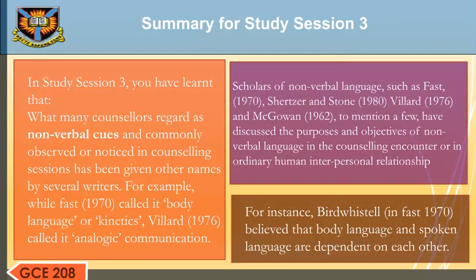Summary for Study Session 3. In Study Session 3, you have learned that what many counselors regard as non-verbal cues has been given other names by several writers — for example, Fast (1970) called it body language or kinetics, and Villard (1976) called it analogic communication. Scholars such as Fast (1970), Scherzer and Stone (1980), Villard (1976), and McGowan (1962) have discussed the purposes and objectives of non-verbal language in the counseling encounter. Birdwhistell, cited in Fast (1970), believed that body language and spoken language are dependent on each other. We have come to the end of Study Session 3. Thanks for listening.